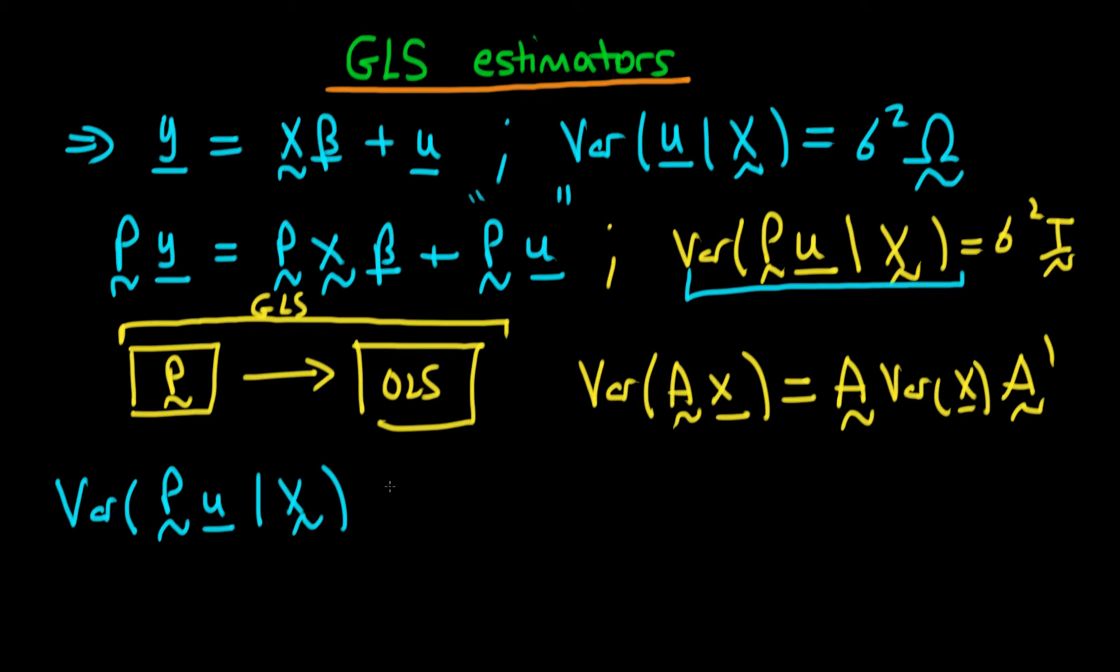And if we use this particular equation up here, we find that we're going to have the variance of Pu given X is just equal to P times the variance of u given X, if I can write it, times P prime. And we know what the variance of u given X is. It's just sigma squared times omega.